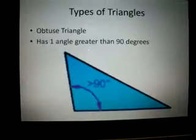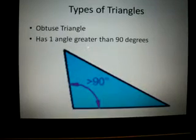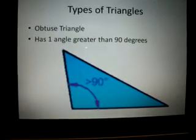The last type of triangle we're going to talk about is an obtuse triangle. It has one angle greater than 90 degrees, which is demonstrated at the bottom.